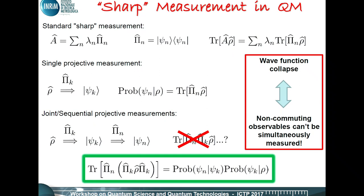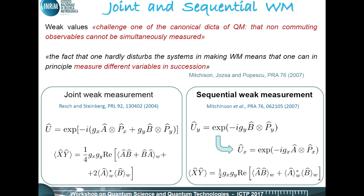If after this first weak measurement we implement a sharp measurement, we again have wave function collapse, so it is not possible to simultaneously evaluate two non-commuting observables. But in a paper by Mitchison, Jozsa, and Popescu, they show that with the weak measurement approach it is possible to release this strict bound and perform measurements on different variables in sequence. This opens the door to joint weak measurements and sequential weak measurements. Today I will talk about the sequential case, and in particular we have to experimentally evaluate this formula.